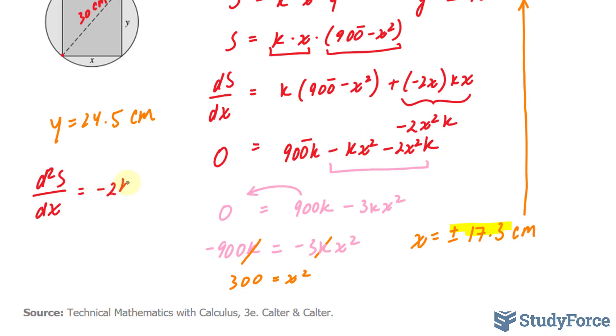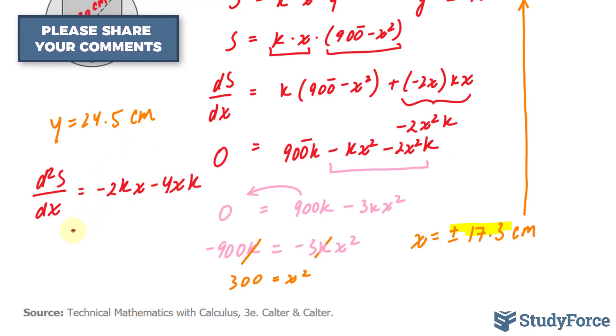This becomes negative 2kx. And this becomes negative 4xk. And I use the power rule for both of these terms. These are both like terms, so I can combine them before substituting 17.3. I don't need to do that, but it looks nicer.